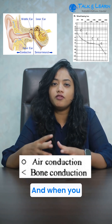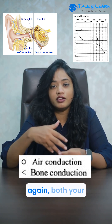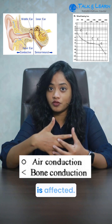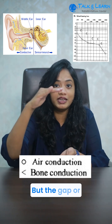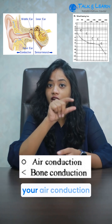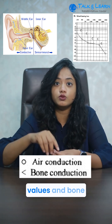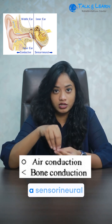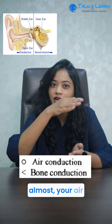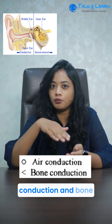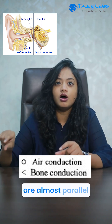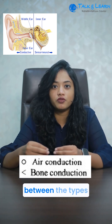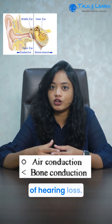When you have a mixed hearing loss, again, both your bone conduction and your air conduction are affected, but the gap or the distance between your air conduction values and bone conduction values is more. In a sensorineural hearing loss, your air conduction and bone conduction values are almost parallel to each other. So that is how we differentiate between the types of hearing loss.